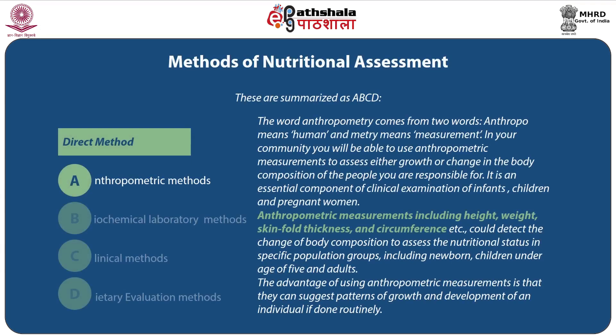Anthropometric Methods: The word anthropometry comes from two words — 'anthropo' meaning human and 'metric' meaning measurement. Anthropometric measurements including height, weight, skinfold thickness, and circumference could detect change of body composition to assess nutritional status in specific population groups including newborns, children under the age of 5, and adults. The advantages of using anthropometric measurement is that they can suggest patterns of growth and development of an individual if done regularly.